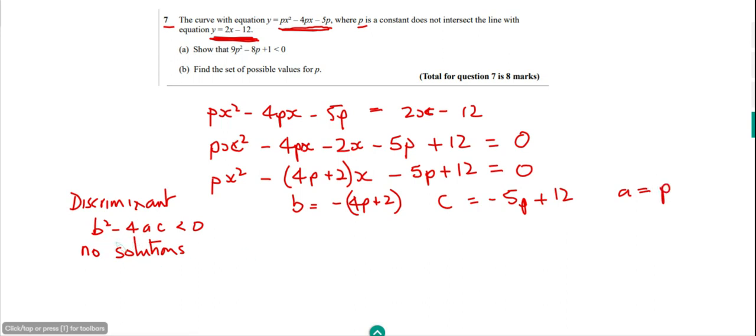So what we're going to do is try and substitute them into this formula for the discriminant. So we've got the B squared. So we've got minus 4P plus 2, and that's all going to be squared. And then we've got minus 4 times the A, so P, and then times by the C, which is minus 5P plus 12.